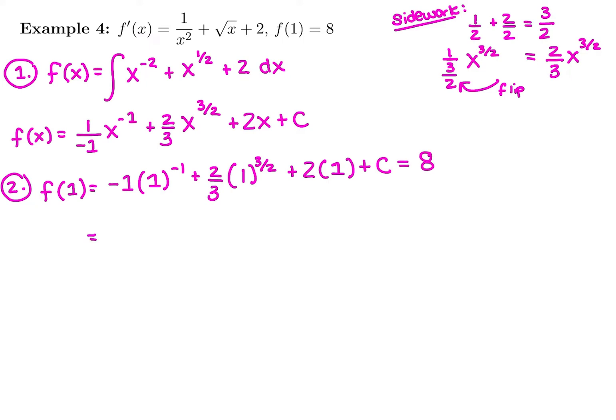So 1 to the power is always 1, so 1 to the negative 1 is going to stay 1, times negative 1 is negative 1. 1 to the 3 halves is going to stay 1, times 2 thirds is going to be 2 thirds times 1, which is 2 thirds, plus 2 times 1 is 2, plus c equals 8.